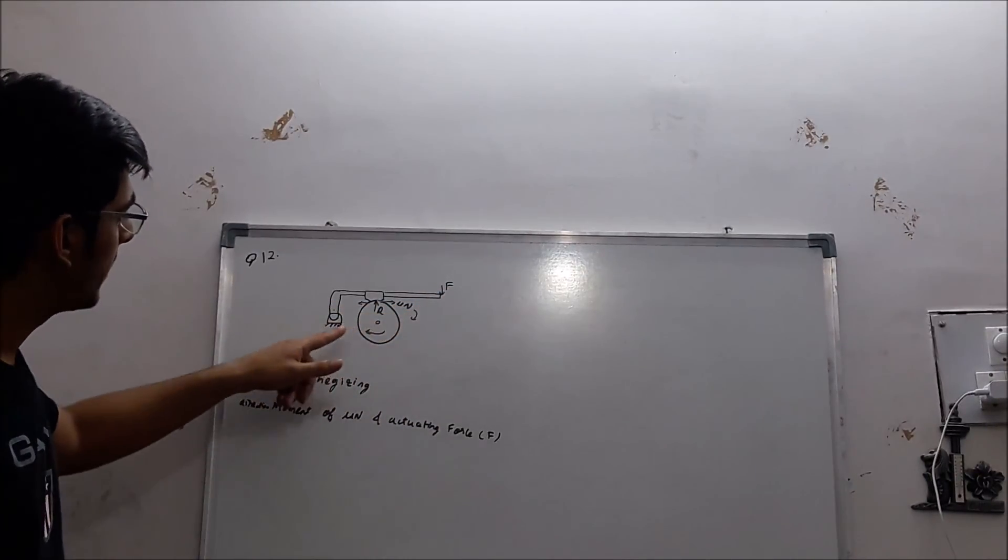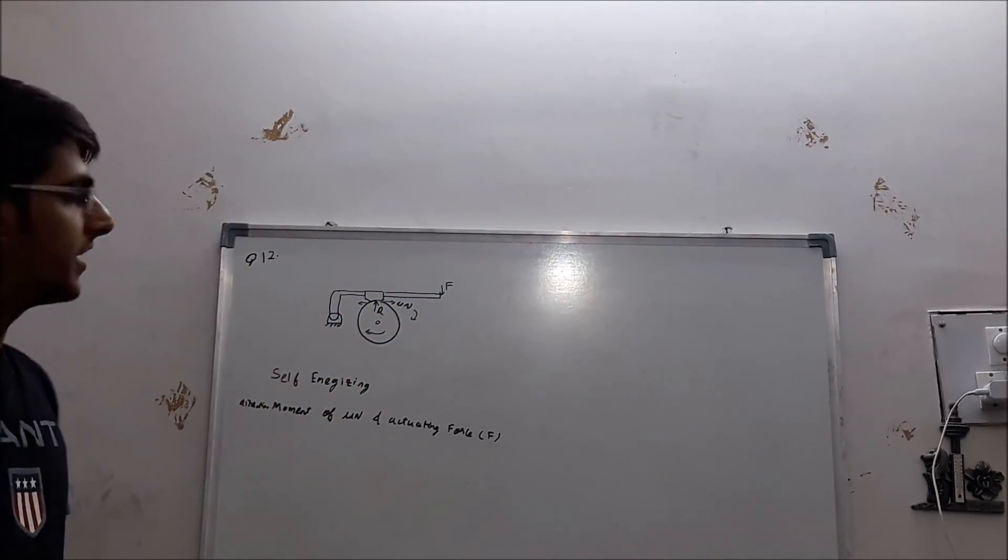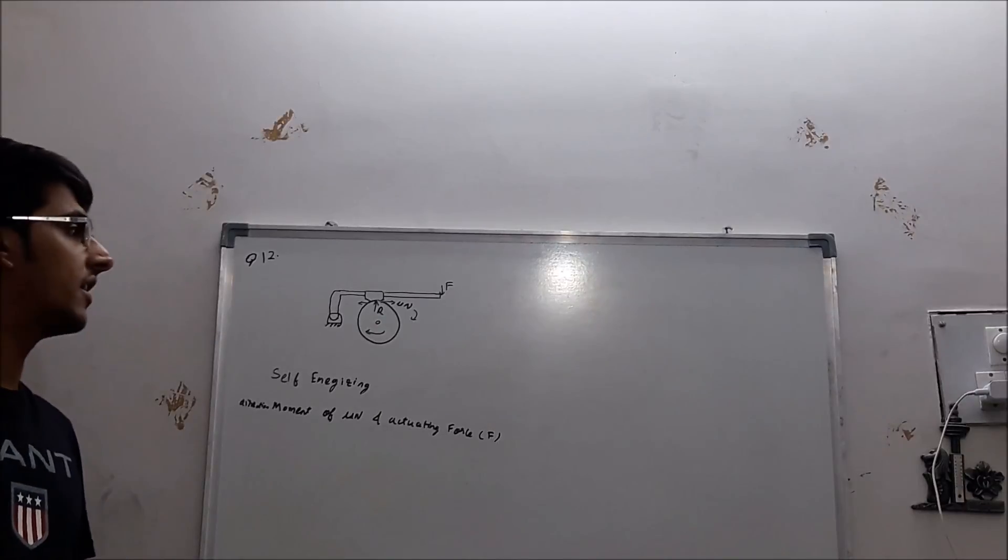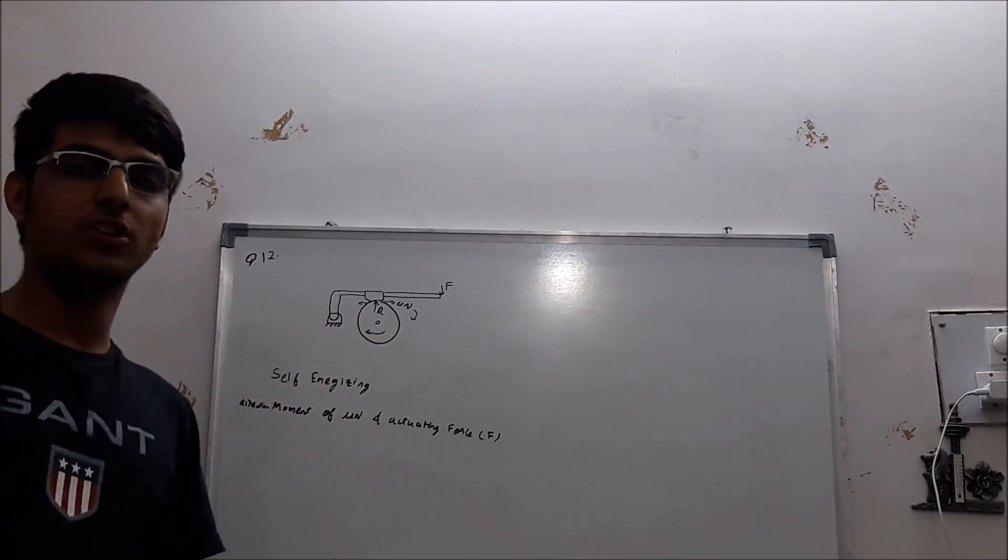As well as this force is having a moment about this pivot in the same direction. So this brake will be self-energizing when the drum is moving in clockwise direction. So option A is correct.